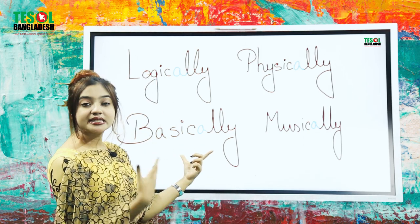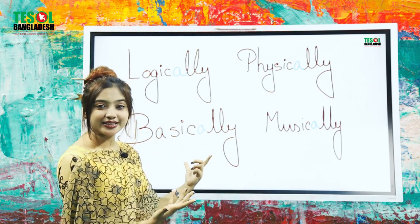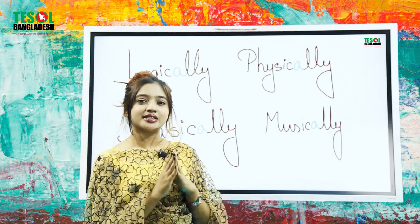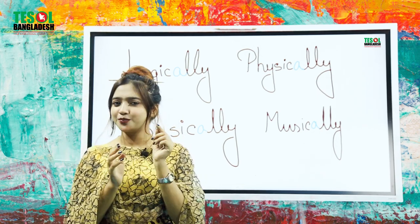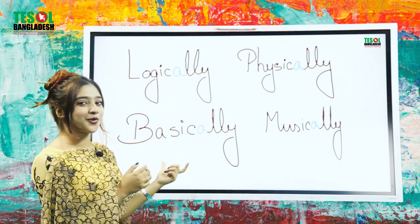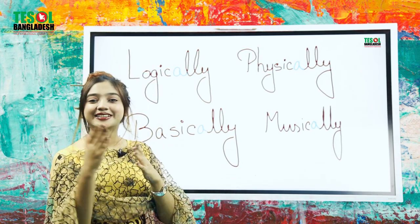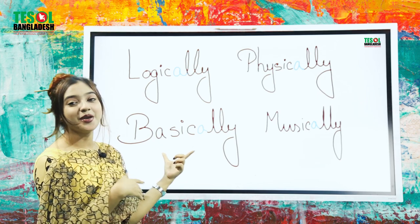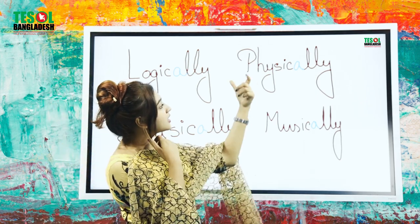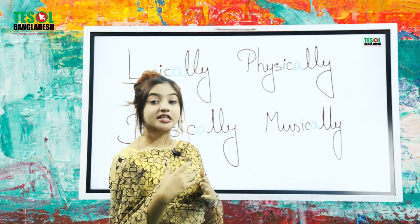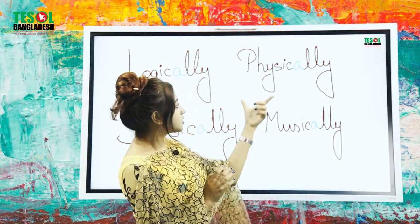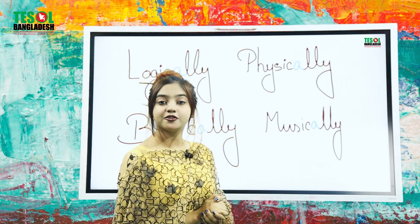The correct pronunciation is 'basically'. Basically. There will be a series of such words. The 'A' is silent, so it's 'basically', right? Then the next one is 'physically' — the wrong pronunciation would be 'physically', but the right pronunciation is 'physically'.